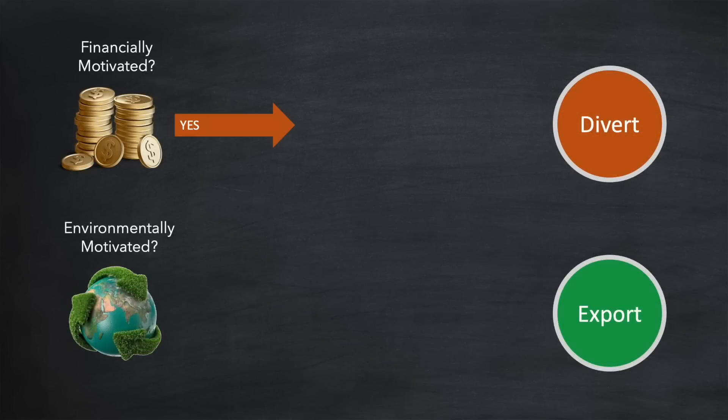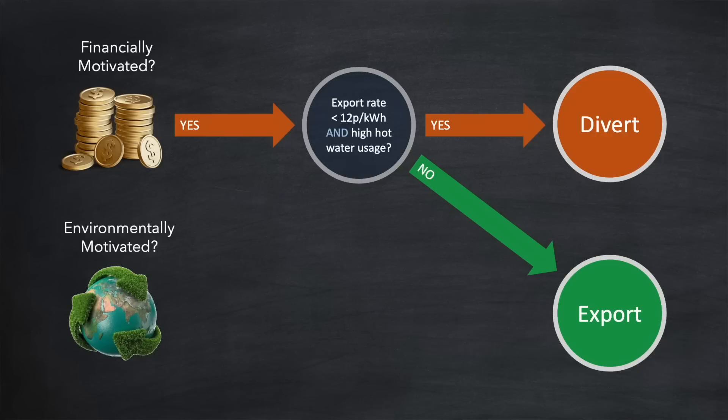I've summarised all my findings in this diagram here. If you're primarily financially motivated, and your export rate is less than 12 pence per kilowatt hour, and you have high water usage, meaning four or more people in the household, then diverting is worth it. But as you've seen, export rates are climbing all the time, and there are several tariffs in excess of 12 pence per kilowatt hour, meaning that exporting is worth a lot more.